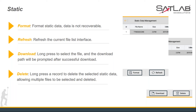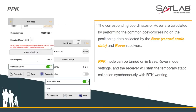In the static data management interface, users can view existing data files to download, delete, or format. Press a record and then you can operate it. When you try to download static data, it will show the download path. After a successful download, you can find the file in the controller folder.